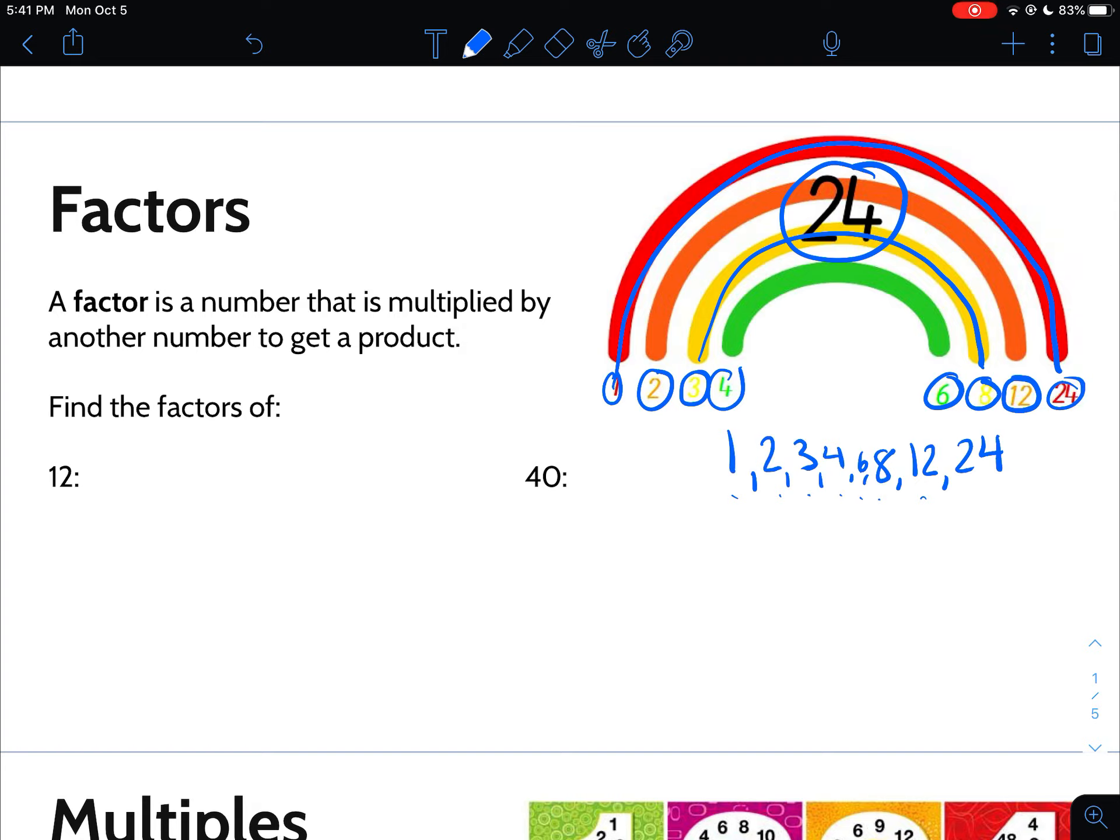I always kind of do pairs, like factor pairs, to help me try to get all the factors when I'm listing them. You don't actually have to draw the rainbow, but that's just how I learned them. You're just thinking of all the numbers that multiply to get the number that I'm asking about. I will tell you that one is a factor of every single number. So I'm going to do two with you, and then you're going to practice a little bit on a worksheet.